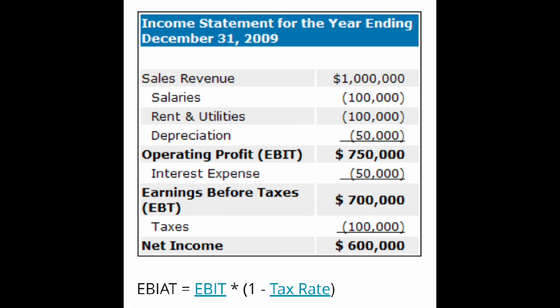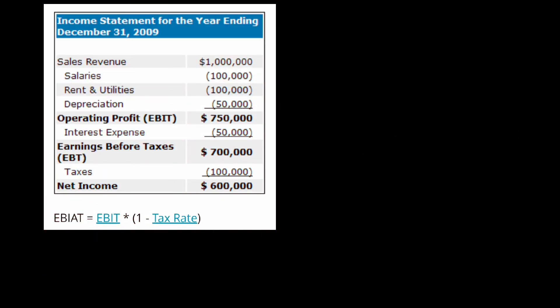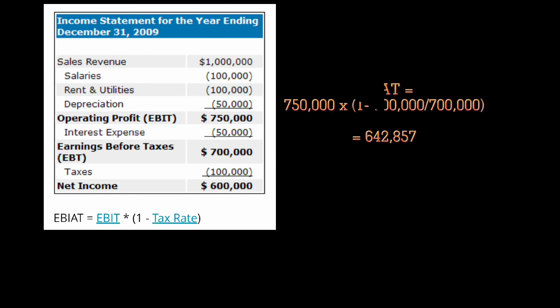Using this income statement for the year ending December 31, 2009, let's try to get the earnings before interest after taxes. Given the income statement and the formula: EBIAT equals EBIT times (1 minus tax rate), let's substitute. So EBIAT equals 750,000 times — first we need to get the tax rate: 100,000 divided by 700,000 equals 0.14. So 1 minus 0.14 equals 0.86. Therefore 750,000 times 0.86 equals 642,857.